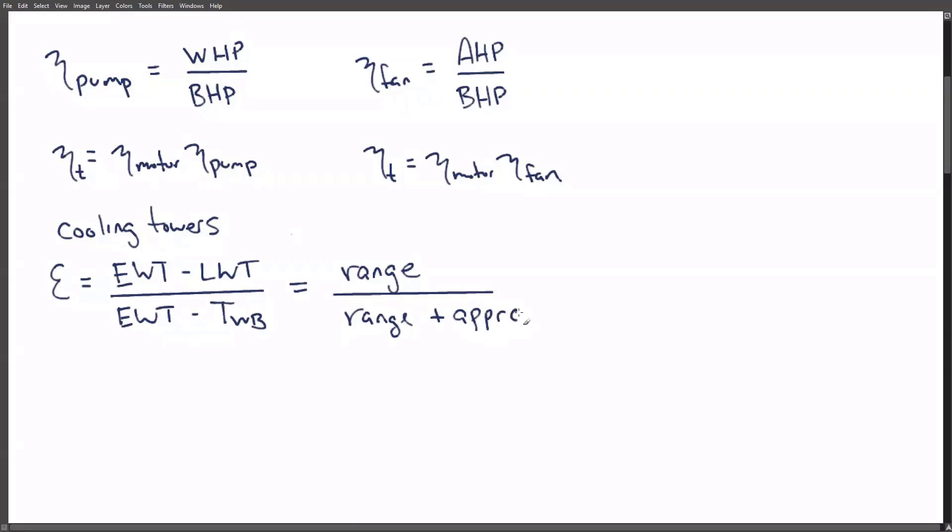The range is simply the delta t. The approach is the difference between the leaving water temperature leaving the tower and the outside wet bulb. It's the difference between what you're getting and what you could be getting. If you don't want to think about it as entering and leaving, you can say that the leaving water is the condenser water supply being supplied by the cooling tower to the water cooled chiller, and the entering water temperature is the condenser water returned being returned to the cooling tower to be cooled.